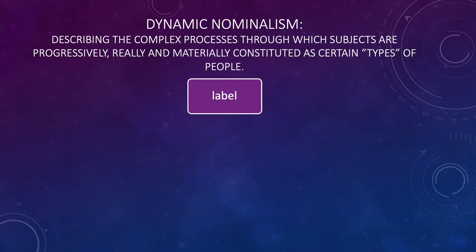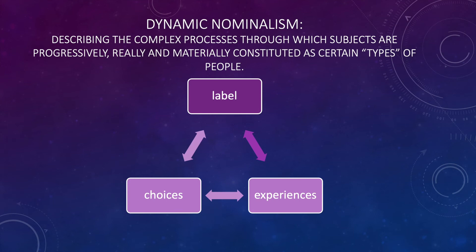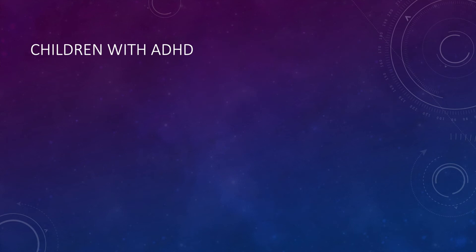In the model, a label shapes experiences, which shapes the context in which people make choices and how those choices affect the label. When people are given a label, they can either perpetuate the label or redefine or resist it. There are both positive and negative outcomes, but as humans we have the power to redefine our labels. Sometimes our actions can perpetuate the label, while other actions challenge other aspects of it.